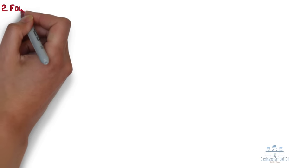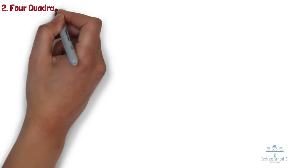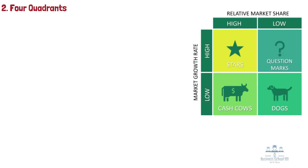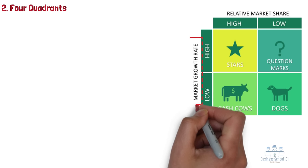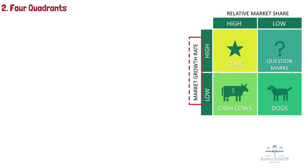Section 2: Four Quadrants. The BCG Matrix plots a company's offerings in a two-by-two matrix, with the y-axis representing the rate of market growth and the x-axis representing market share. It then divides products into four quadrants: Stars, Cash Cows, Question Marks, and Dogs. Let's discuss them individually.